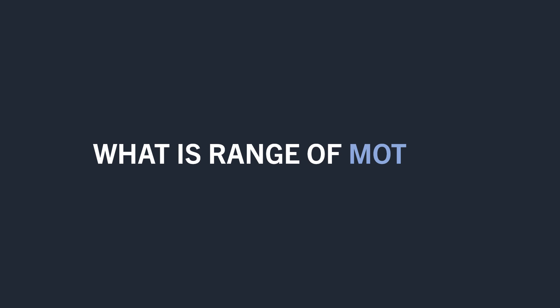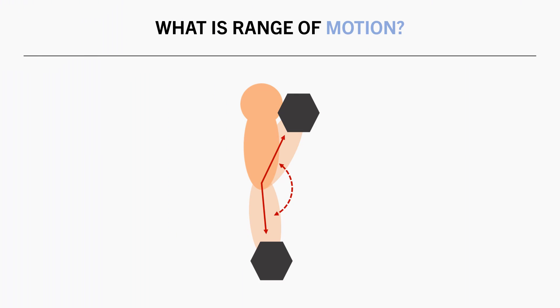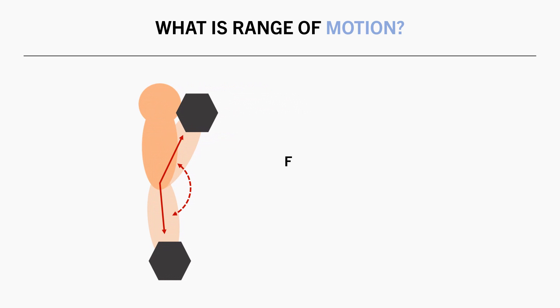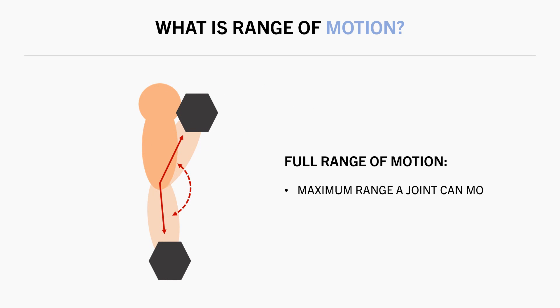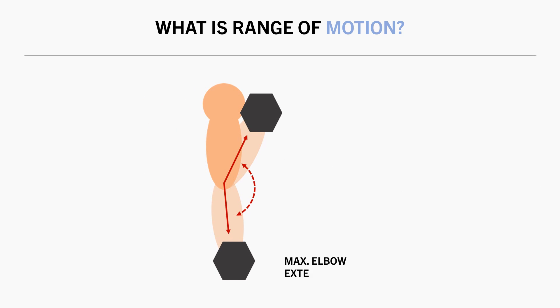First, let's explain what exactly range of motion refers to. This refers to the change in joint angle we experience during an exercise. This is usually defined relative to a full range of motion, meaning the maximum range that the joint can move through an exercise. For example, a full range bicep curl would refer to lifting from a fully extended elbow angle to a fully flexed elbow angle.